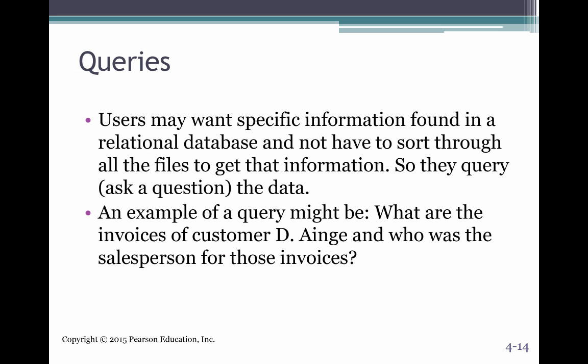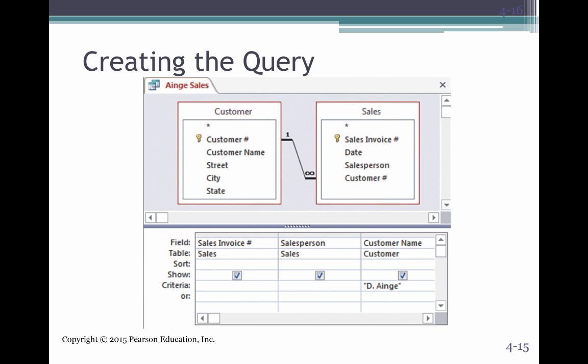Now queries, that's where you want some specific information. Queries is where we do in Access reports or different forms to gather that information, and these also are in relational databases, but here you're kind of sorting through a bunch of files. So the queries, like you're asking a question. So for example, what are the invoices of this customer and who was the salesperson? So this is exactly what it looks like in Access, and I would recommend that you practice that here. Then you'd see the sales invoice number as the field. And this is the query field in Access, and then the salesperson, and then the customer, and here you're selecting the particular customer.